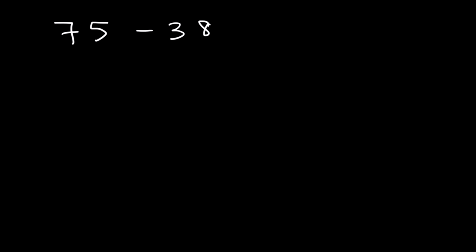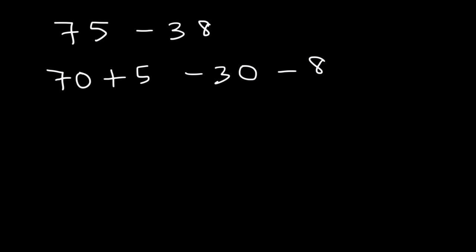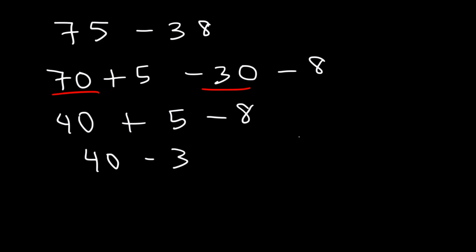Now let's try some examples involving subtraction. What is 75 minus 38? We can use the same technique — break down 75 into 70 plus 5, and 38 into 30 and 8. But you need to apply the negative sign to both numbers. So 70 minus 30 is 40. We have 40 plus 5 minus 8. 5 minus 8 is negative 3, and 40 minus 3 is 37. So 37 is your final answer.